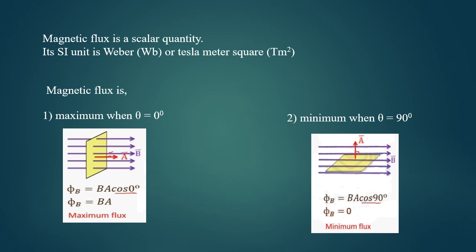Looking at the first figure, we observe that when a plane is placed perpendicular to the magnetic field, we see that the normal vector to the area and the magnetic field is parallel to each other, making an angle theta equal to zero.